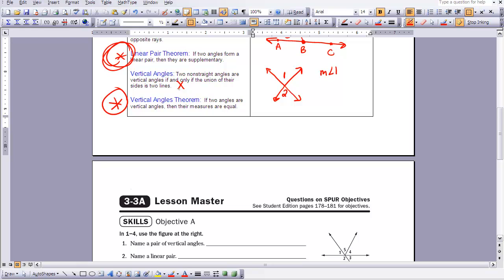But we also have another set of vertical angles here. We have angle three and angle four. This is a non-straight angle and this is a non-straight angle. And when we take the union of that, we get two lines. And so the measure of angle three is equal to the measure of angle four also.